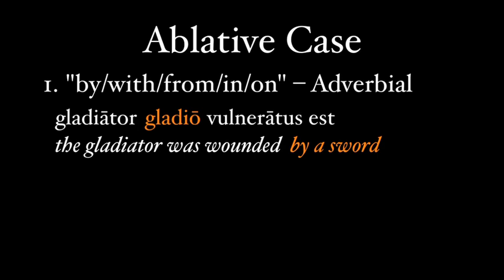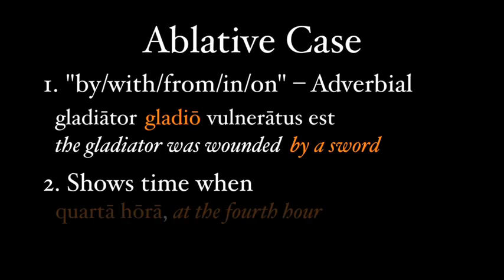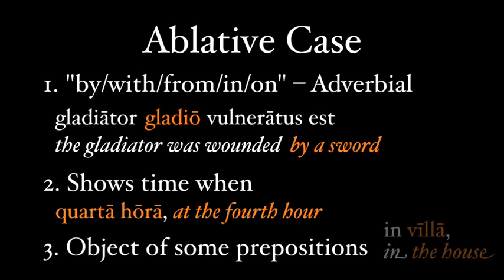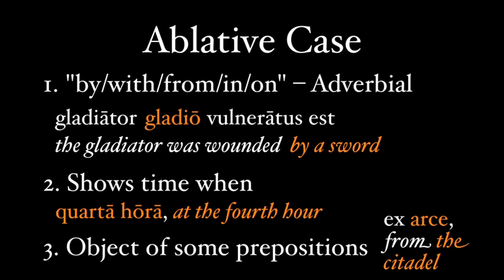The ablative case can show the agent that did an action — that's 'by.' Accompaniment — that's 'with.' Separation — that's 'from.' Or where something took place — that's 'in' or 'on.' It's best to remember that the ablative often answers the question: how? You can also use the ablative to show a time when something occurred: 'quarta hora' means at the fourth hour. Finally, the ablative, like the accusative, is used with certain prepositions. These often show location — 'in' plus the ablative means 'in,' so 'in villa' is in the house — or motion from, like 'ex,' which means from: 'ex arce,' from the citadel.